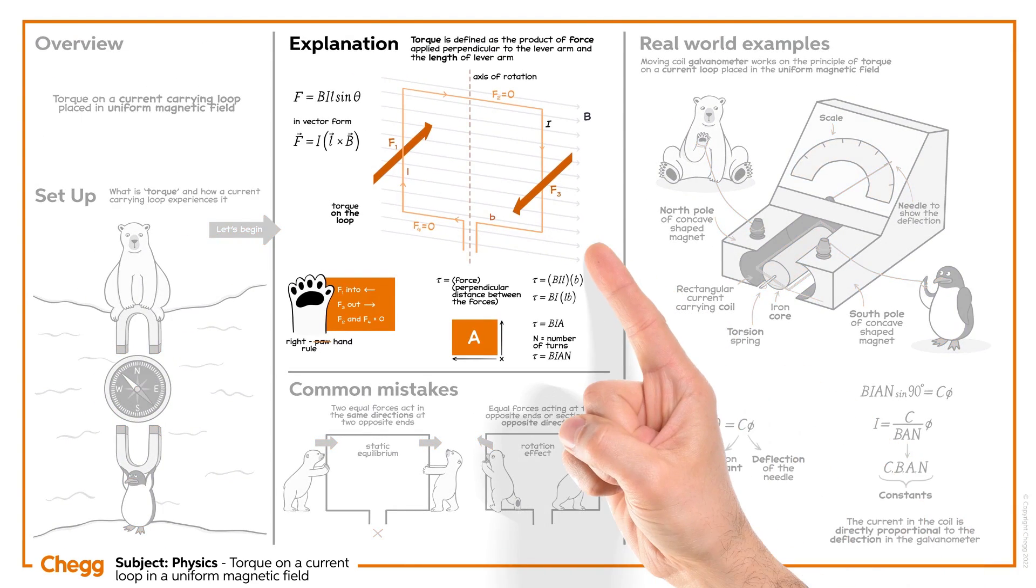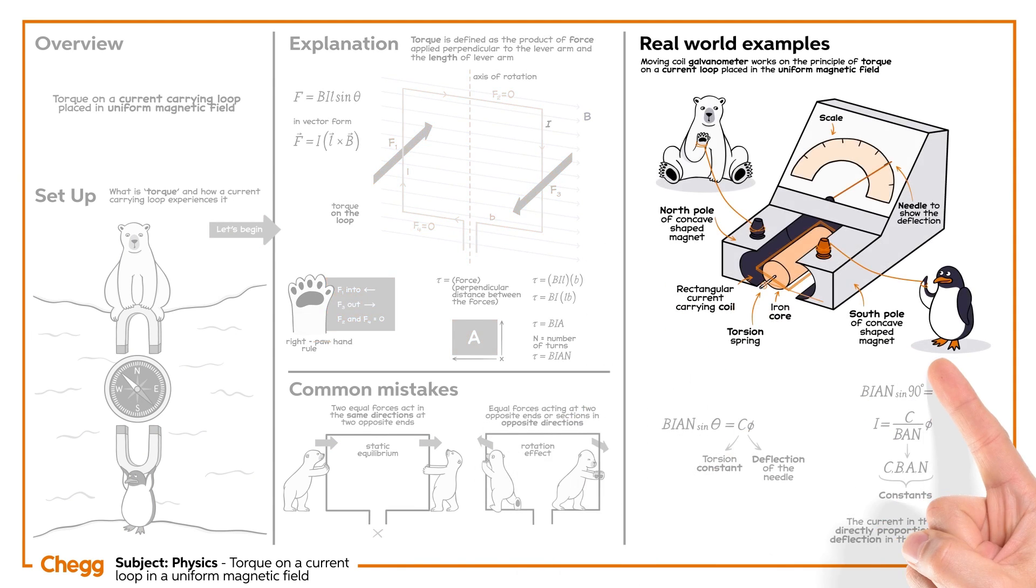In this video, we have learned about how the torque is developed on a current loop placed in the magnetic field, and the working of moving coil galvanometer.